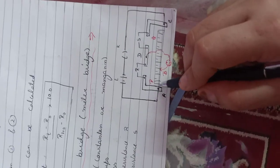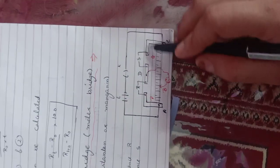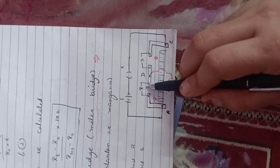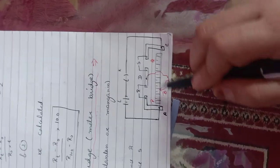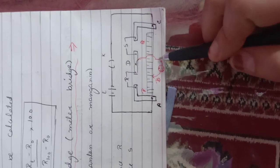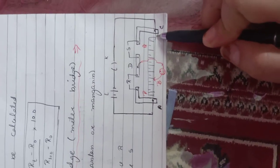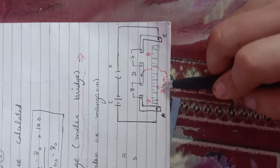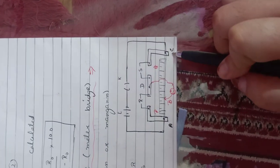In this meter bridge, we have a wooden scale. A and C are the copper strips. We have a constantan and manganin wire stretched across. In the two gaps, we put one known resistance R and one unknown resistance S. We attach a copper jockey connected to the galvanometer. Points A, B, and C divide the wire so that A to B gives one resistance and B to C gives another resistance.